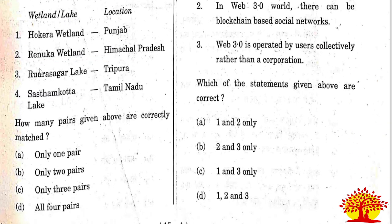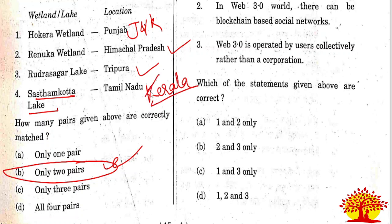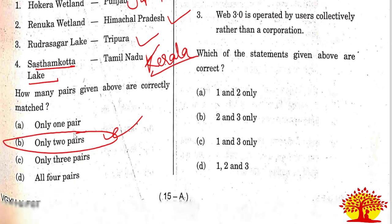Thirtieth question on wetlands and their locations matched with states: Only two pairs are correctly matched. Option B is the right answer. Okera is in Jammu and Kashmir - correct. Rudrasagar is in Tripura - correct. Renuka wetland is in Himachal Pradesh - correct. However, Sasthamkotta is in Kerala, not Tamil Nadu, making that pair incorrect. So only two pairs are matched.